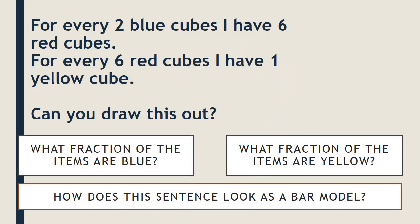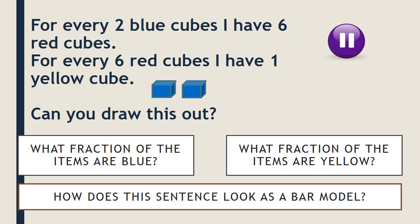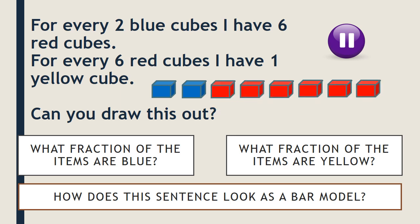For every two blue cubes I have six red cubes, and for every six red cubes I have one yellow cube. Can you draw this out? Pause the video and have a go. So first, two blue cubes. For every two blue cubes I have six red cubes. Then for every six red cubes I have one yellow cube — so I put on my one yellow cube. And that's how it looks drawn out.